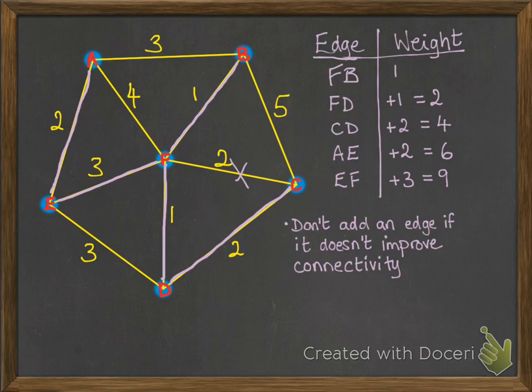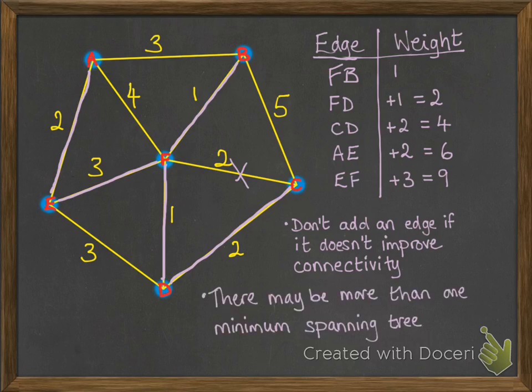Some things from that: You don't add an edge if it doesn't improve the connectivity of your tree. And the other thing is, there may be more than one minimum spanning tree possible, and it's still correct. At the points where you were able to choose between equally weighted edges, it doesn't matter which one you pick.